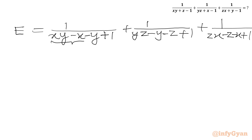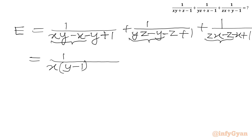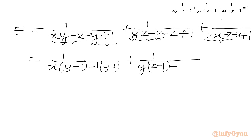Now from the first term we can take x common, and from the remaining part take minus 1 common, giving 1 over x times y minus 1, minus 1 times y minus 1. Similarly, take y common from the second term and minus 1 common, giving y minus 1 times z minus 1. And take z common from the third term and minus 1 common, giving z minus 1 times x minus 1.